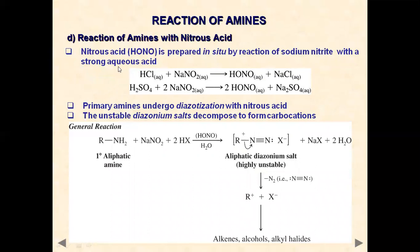Another important reaction is the reaction of amines with nitrous acid. Nitrous acid is prepared in situ by reaction of sodium nitrite with a strong acid. For example, sodium nitrite with HCl gives nitrous acid and sodium chloride; or sodium nitrite with sulfuric acid gives nitrous acid and sodium sulfate. Nitrous acid is the reacting species that reacts with amines to give a diazonium salt.